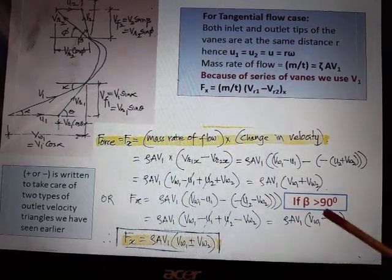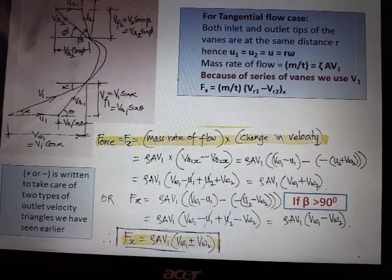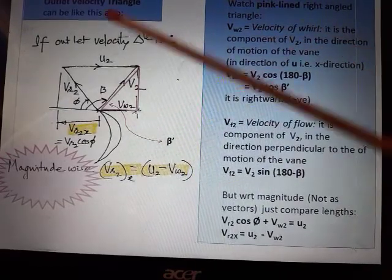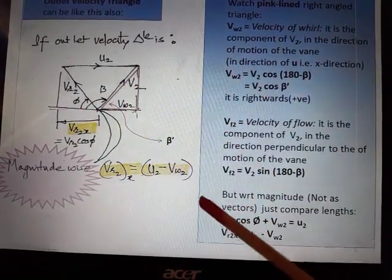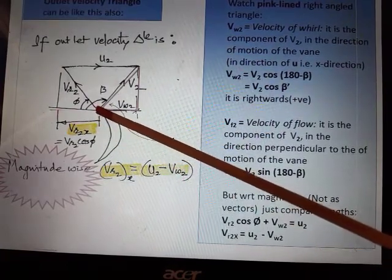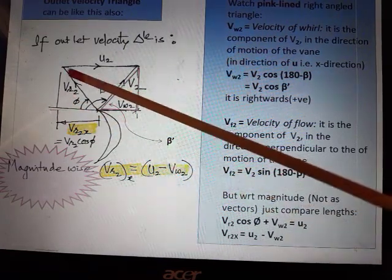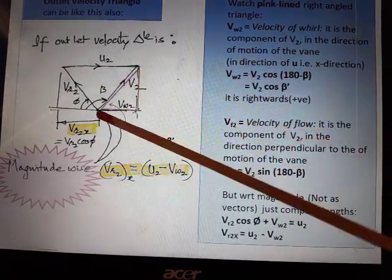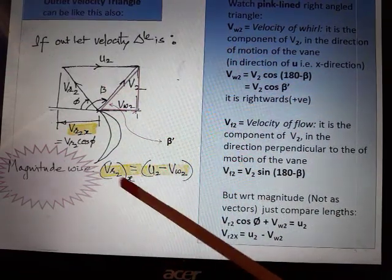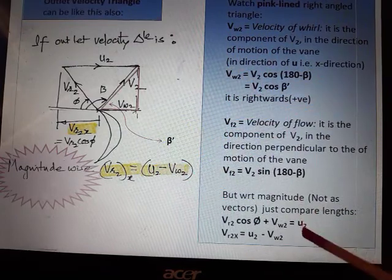Right, this more than 90 degrees, this particular thing is explained in this slide: outlet velocity triangle with angle beta more. So what we want is Vr2x, we want this much which is going left towards, minus sign. But this can be calculated as u2 minus Vw2, that's how it is written. So Vr2x is u2 minus Vw2, the details are given here, one can understand.